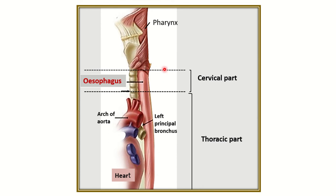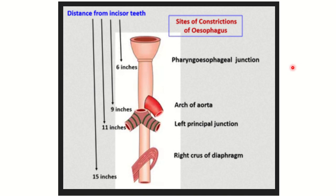The esophagus has three parts: the cervical part, the thoracic part, and a smaller abdominal part. We can identify the sites of constriction of the esophagus along these parts.